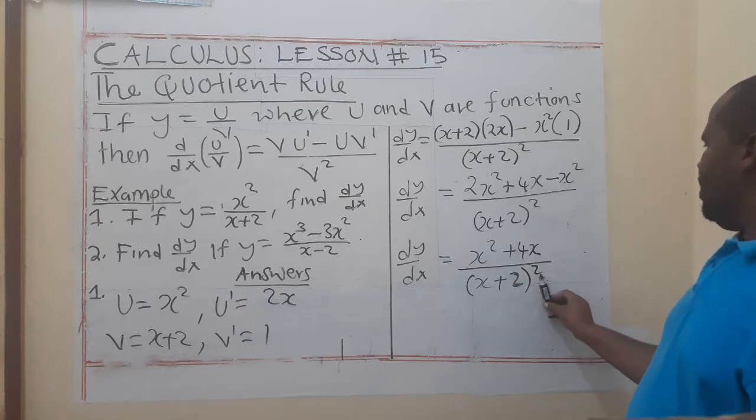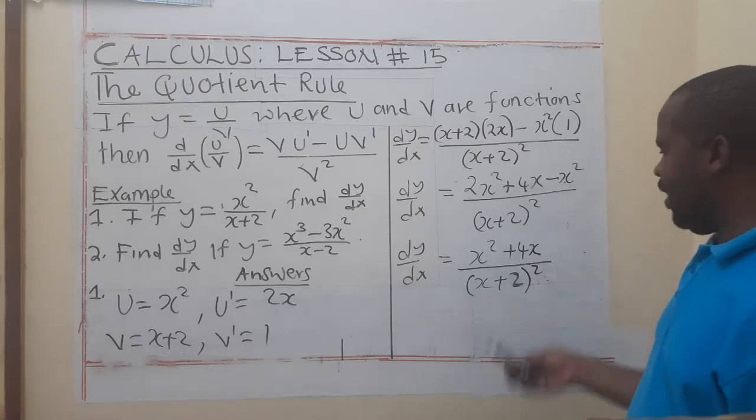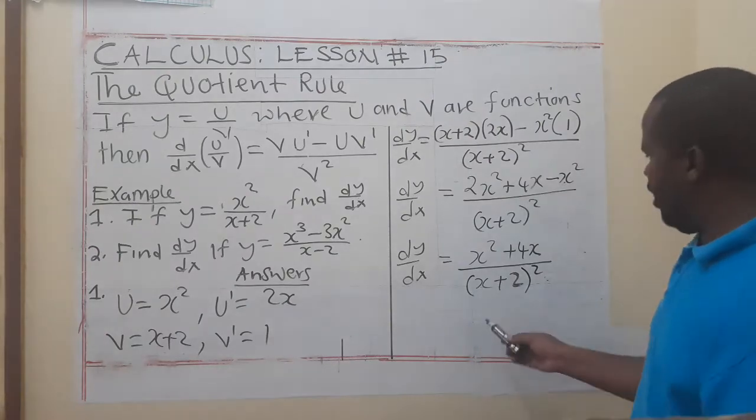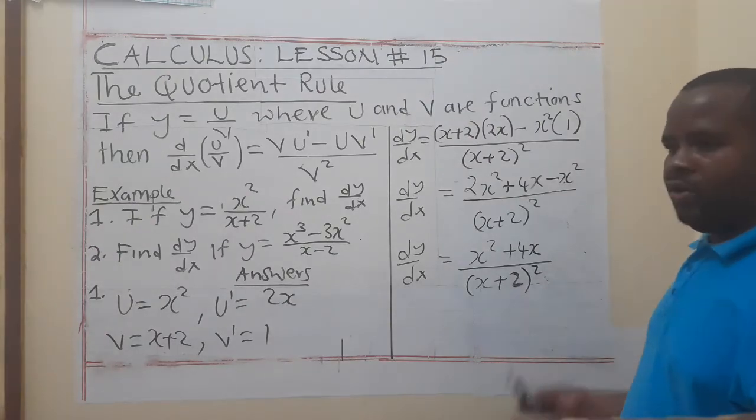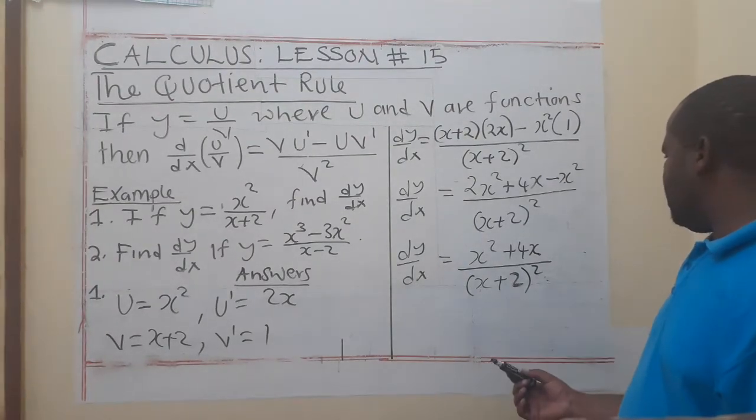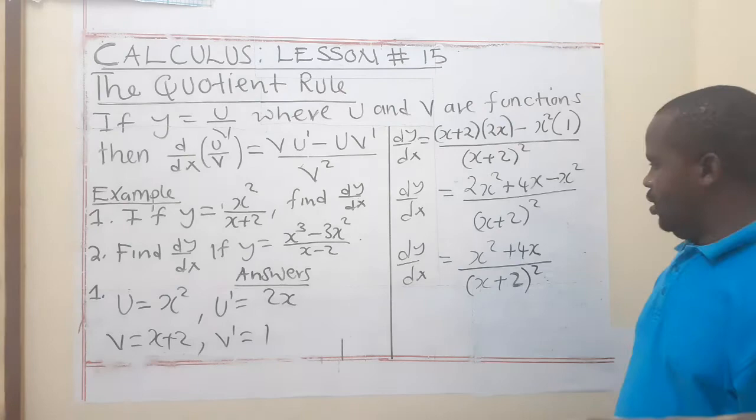So dy/dx is equal to x squared plus 4x divided by x + 2 to the power 2. If you want, you can expand this, or just end there. If you are asked to find the gradient at a point, let's say 1, you put 1 here. But even this form is okay.